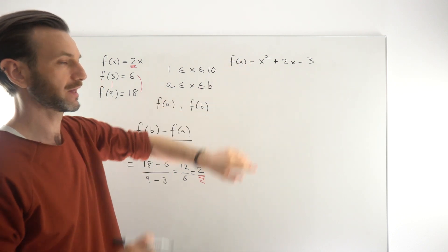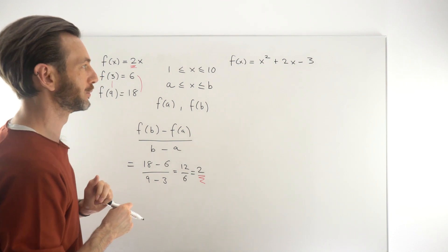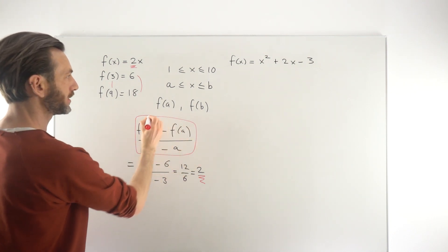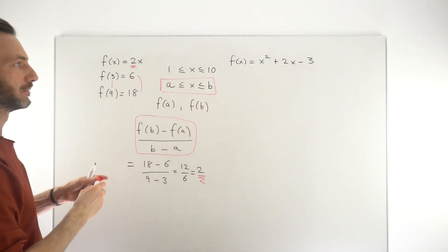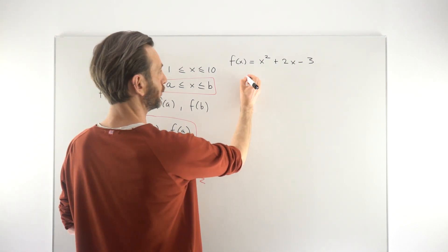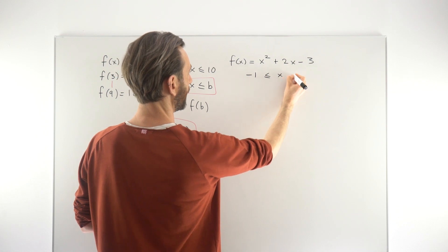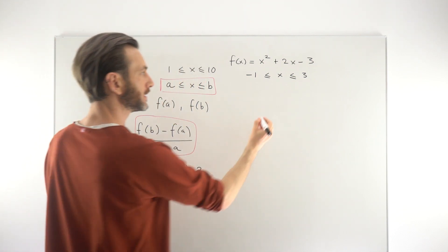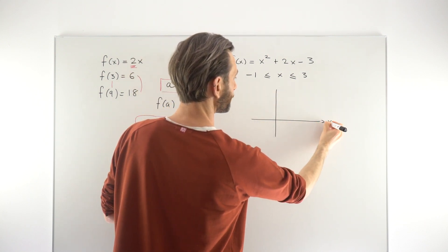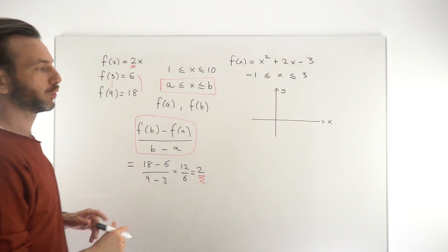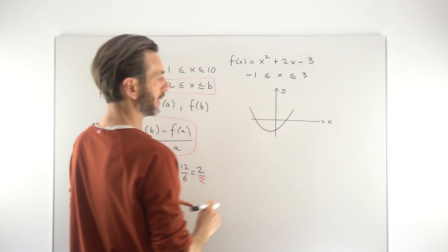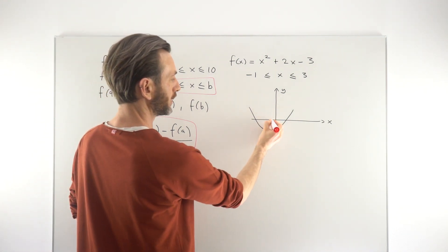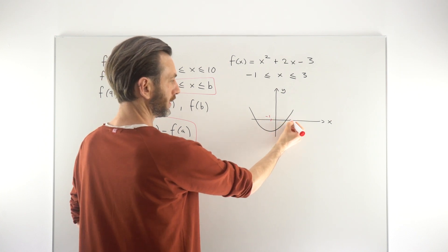When you move to curves, though, that correlation doesn't quite hold, and we'll see that with this next example. This is the formula to take away from this class, and it's only valid when you've got a range of values a and b. For this question, our function is a quadratic and we're looking at the range minus 1 ≤ x ≤ 3. If we sketch the graph, it comes out to be a parabola, and minus 1 is on the left side while 3 is over to the right.